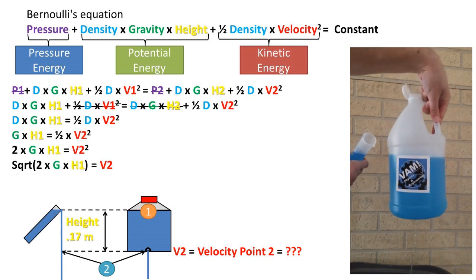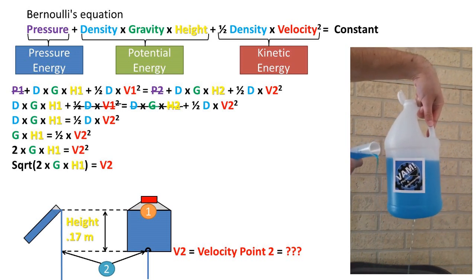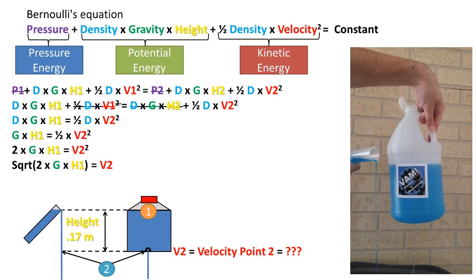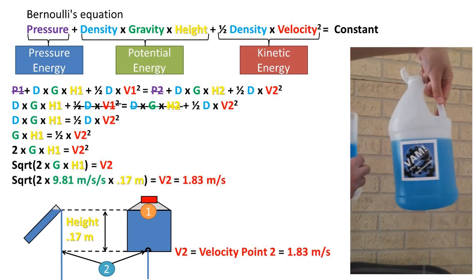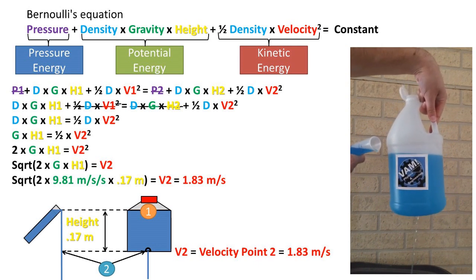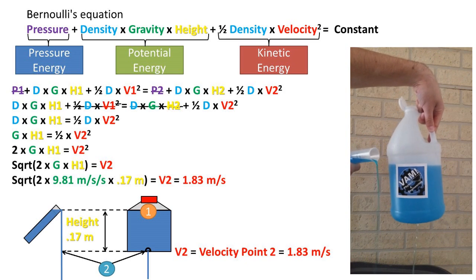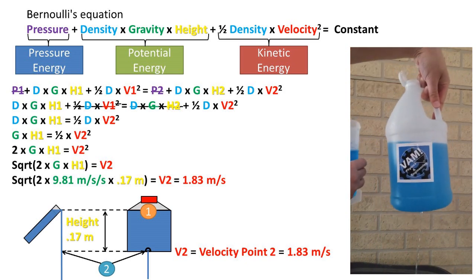Then we take the square root of both sides of the equation. We are left with the square root of 2 times gravity times the height at point 1 being equal to the velocity at point 2. Plugging in all of our values, we get a velocity at point 2 of 1.83 meters per second for both the graduated cylinder example and the jug filled with water example.